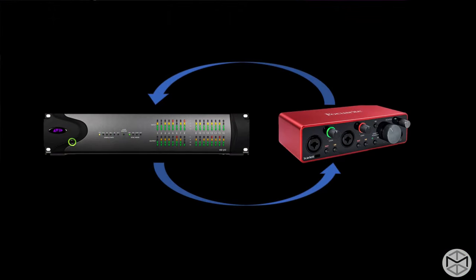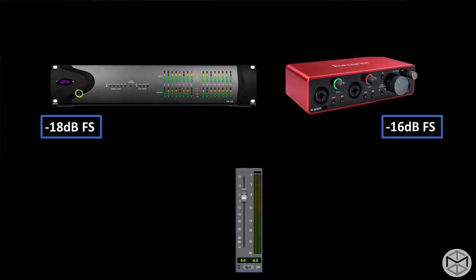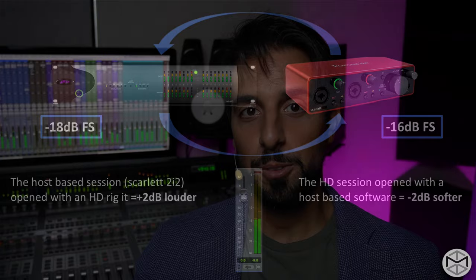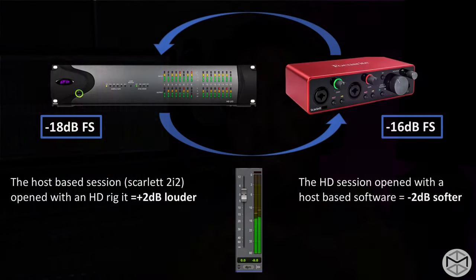Let's pretend we're recording an artist with our HD rig and with our Focusrite 2i2 rig — same levels, same artist, same performance. One performance recorded at home, one recorded in the studio. If you open the session recorded with your HD rig on your home studio setup, it's going to sound 2 dB lower than it was when tracked in the studio. Whereas the session recorded at home at minus 16 dB, if opened in a professional recording studio, would actually sound 2 dB louder — because the two systems are calibrated to two different values. It's really important to understand that when working between professional and non-professional equipment, there's going to be a difference in levels.